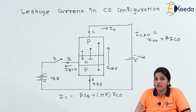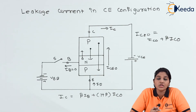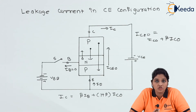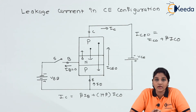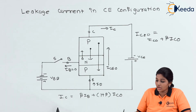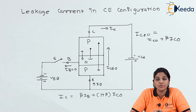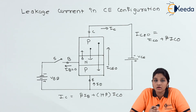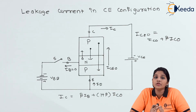In common emitter configuration, the value of beta is usually considered as 100, which is given by the manufacturer. So the collector current is beta times IB, which is beta times larger than the collector current in common base configuration.